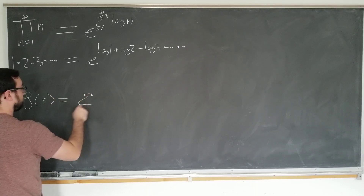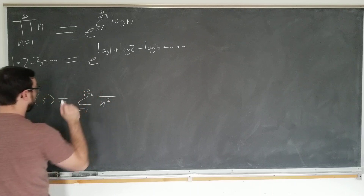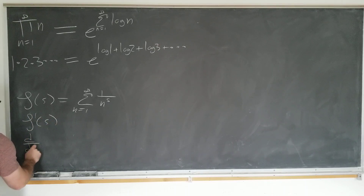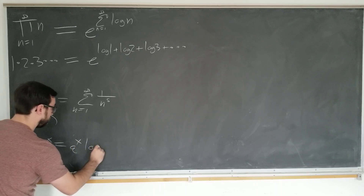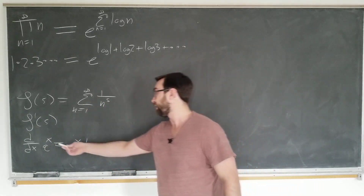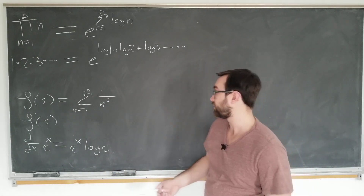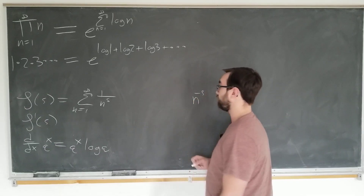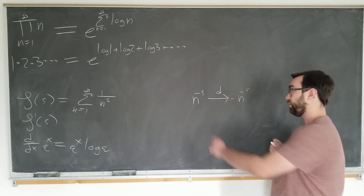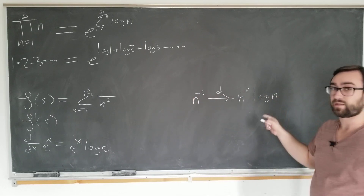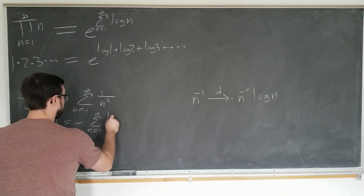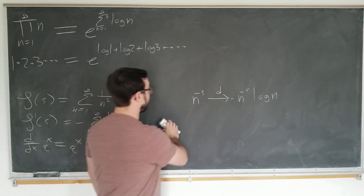We have the zeta function as before, and we want to take the derivative of it. If we take the derivative of the zeta function using the identity that the derivative of an exponential of base a is the exponential multiplied by the log of the base, we have something of the form n to the minus s. When we differentiate it, it becomes n to the minus s times minus log n. So zeta prime of s is minus the sum from n equals 1 to infinity of log n over n to the s.